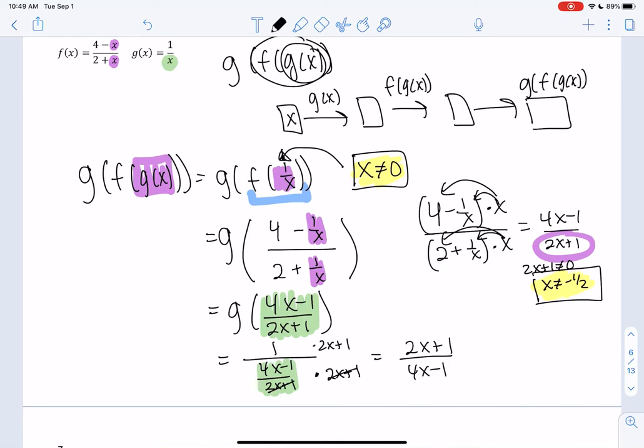And technically I didn't ask for domain, but why not? Good practice. So we already know x can't be 0 or negative 1 half because those were restrictions before. And now there's one more restriction because 4x minus 1 can't be 0. So every time you do an input, you have to find new restrictions. So what is this? 4x can't be 1, so x can't be 1 fourth. So my domain is x can't be 0, negative 1 half, or 1 fourth.